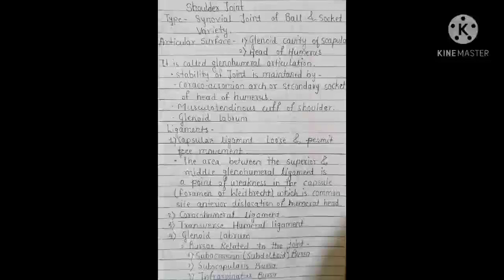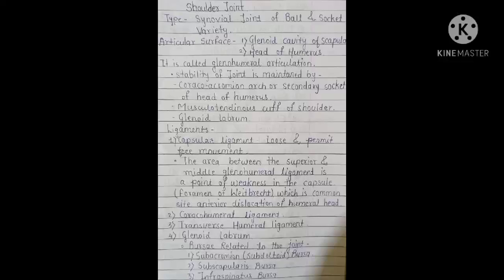The shoulder joint is a synovial joint of the ball and socket variety. Articular surfaces are the glenoid cavity of the scapula and the head of the humerus — this is called the glenohumeral articulation. Stability is maintained by the coracoacromial arch (a secondary socket for the head of the humerus), the musculotendinous cuff of the shoulder, and the glenoid labrum.